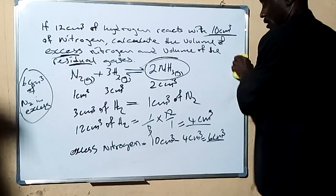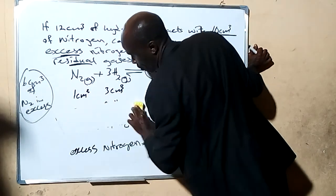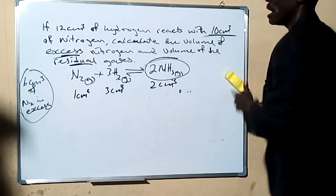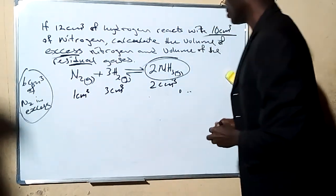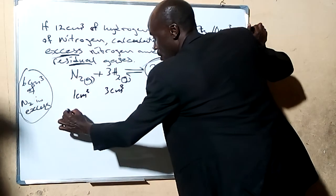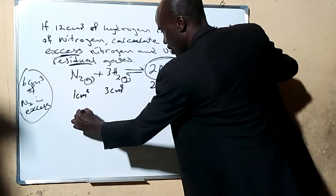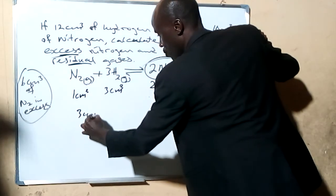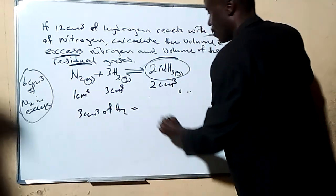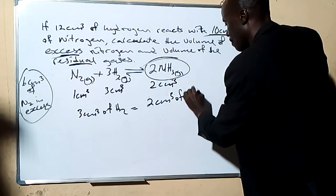So in this case, we have 12 cm³ of hydrogen combining with nitrogen. Let's find the volume of ammonia produced when 12 cm³ of hydrogen combines with nitrogen. From the chemical equation, 3 cm³ of hydrogen will give us 2 cm³ of ammonia.